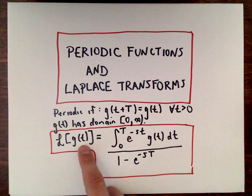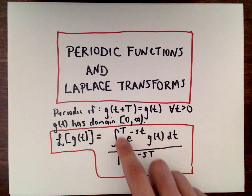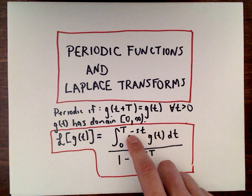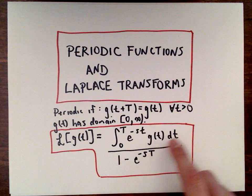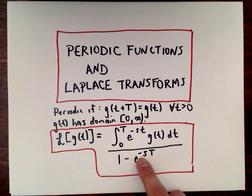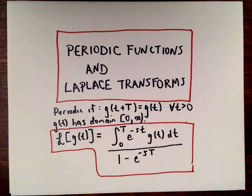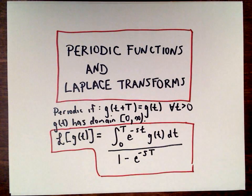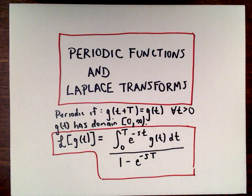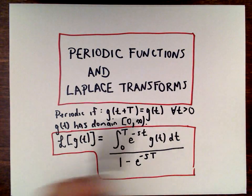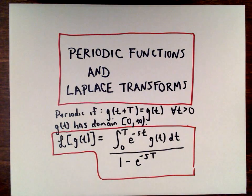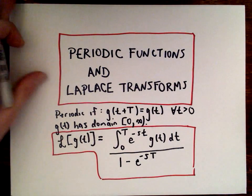It turns out the Laplace transform of g of t is equal to the integral from 0 to capital T of e to the negative s little t, multiplied by g of little t dt, divided by 1 minus e to the negative s capital T. I've seen a couple different books — they like to use little t's, big T's, and taus, so I'm going to stick with that convention just to hopefully line up with the way your book describes it. In this video I'm going to do a proof.